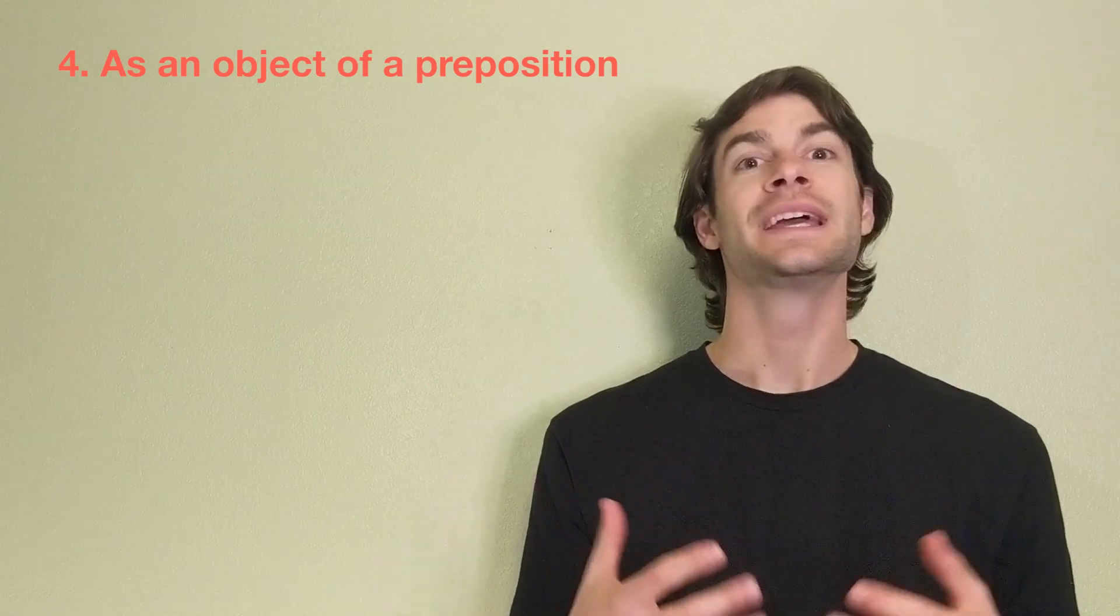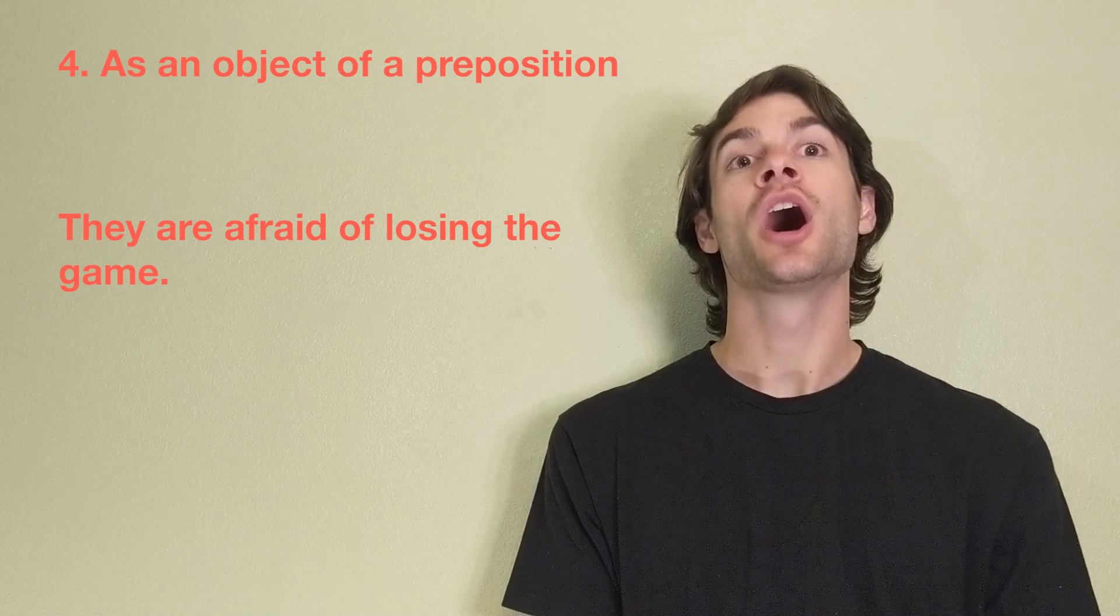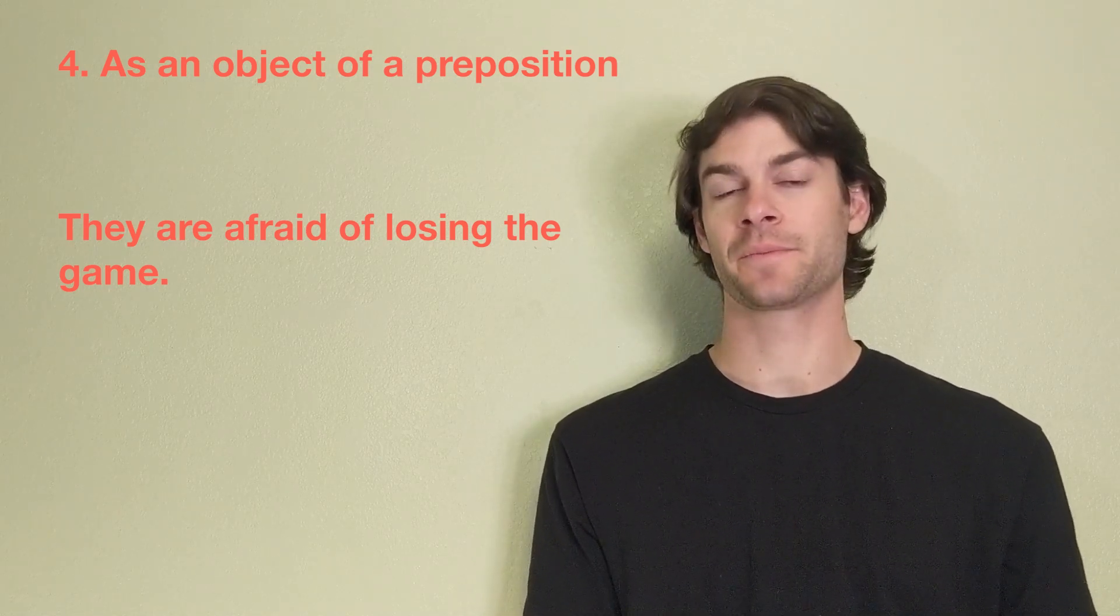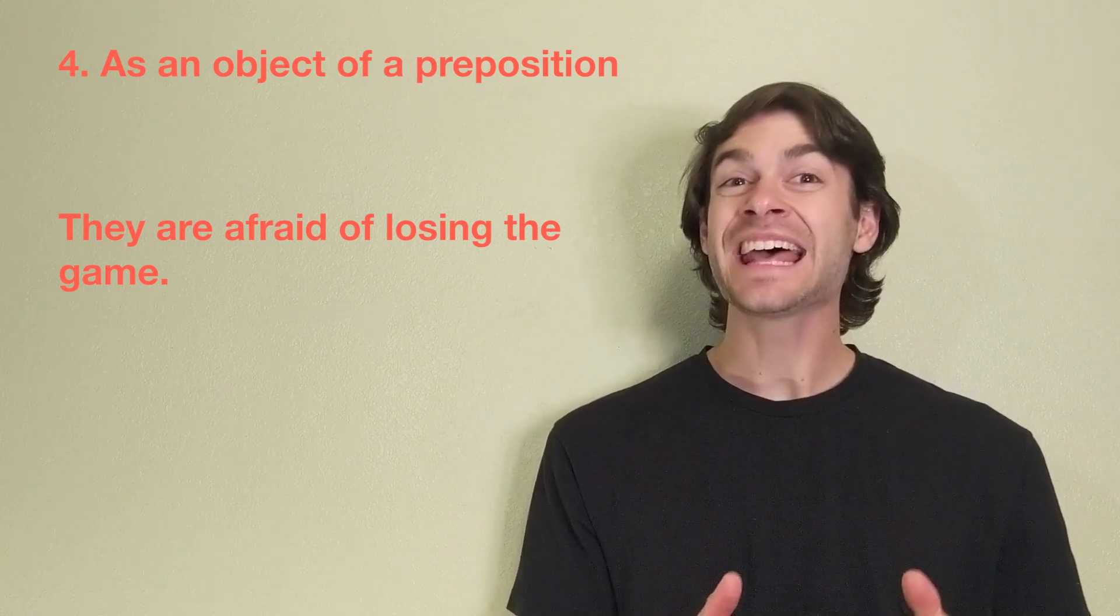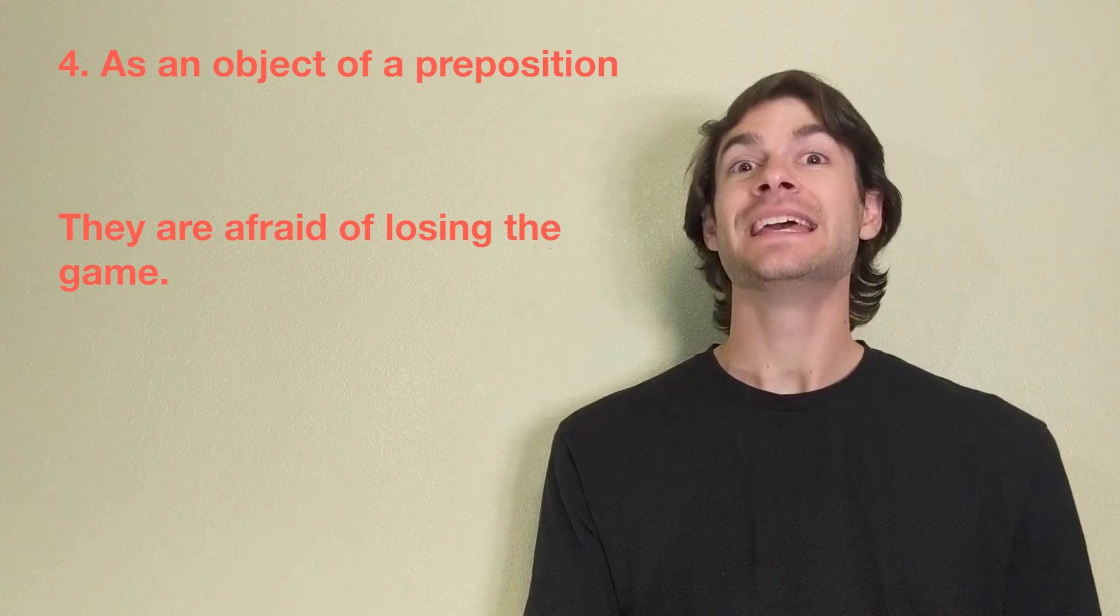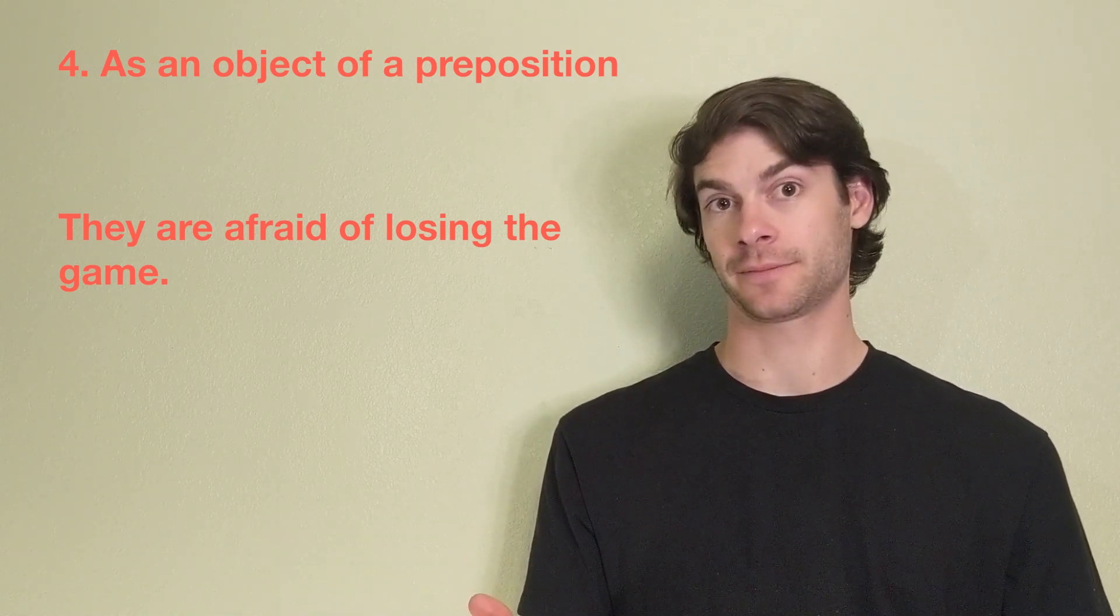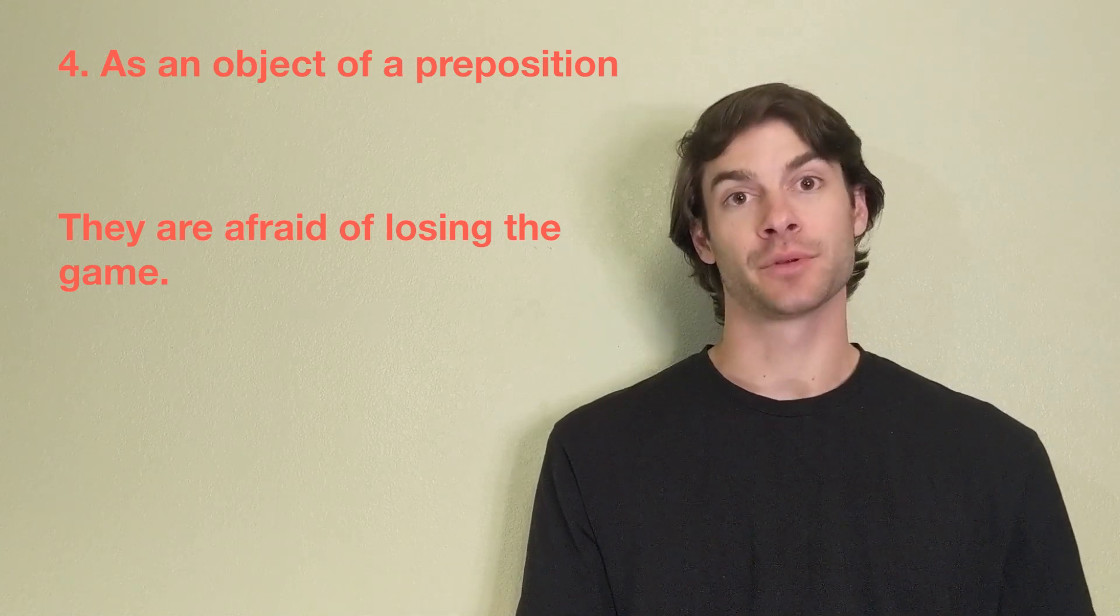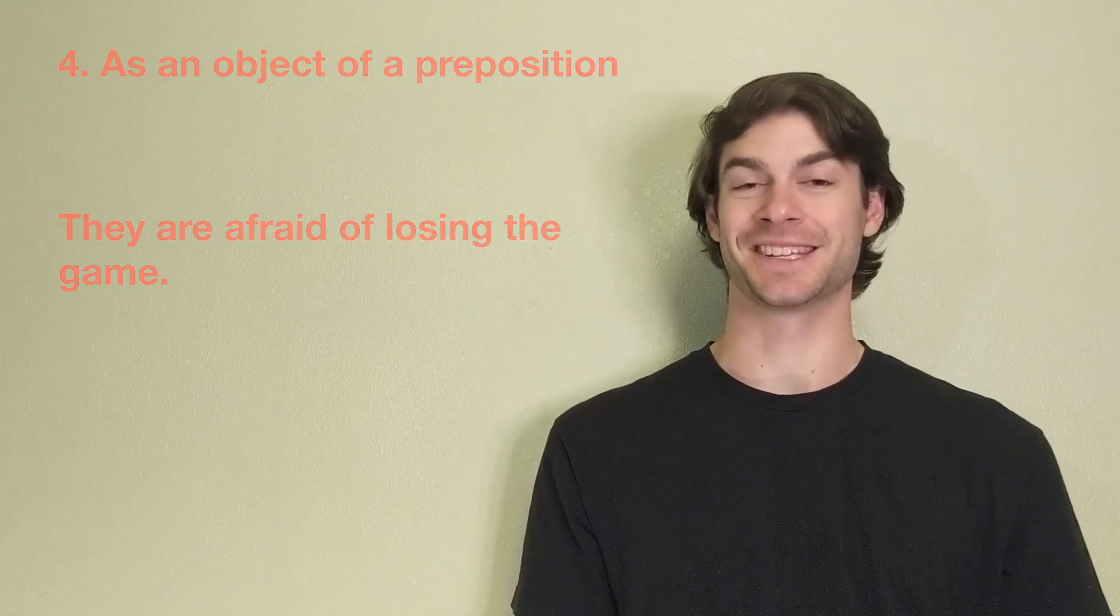This rule is similar in the sentence, they are afraid of losing the game. In this example, our adjective and preposition combination, afraid of, is followed by our object, losing. In both examples, the gerund is the object of the preposition in the sentence.